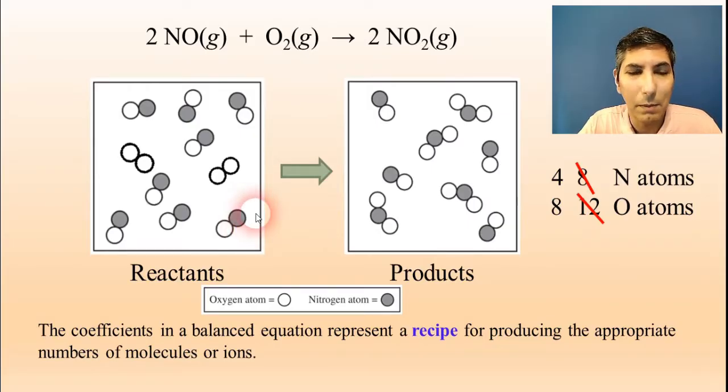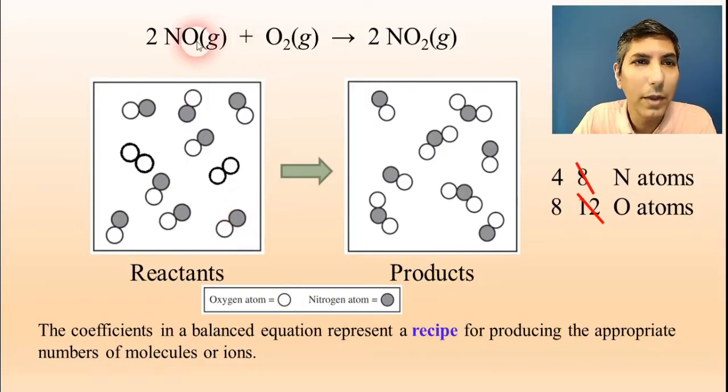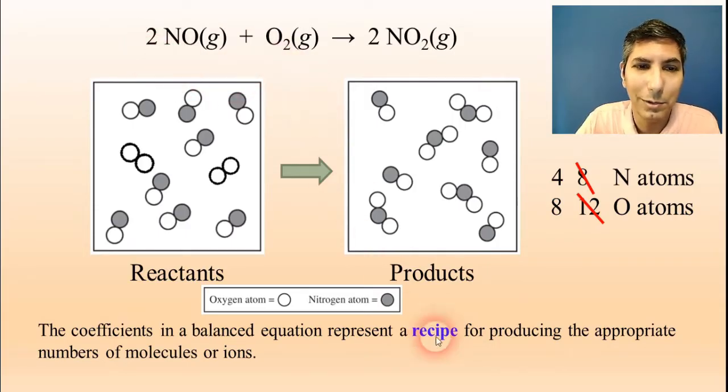We can't change one element into another. And so you can't somehow magically take an oxygen, a white circle, and turn it into a gray circle. It doesn't work that way. You have to have eight nitrogens, 12 oxygens on both sides. Also have to respect the recipe here, that ratio of two NOs to one O2. So that's how you would solve something like this.